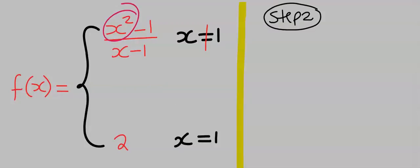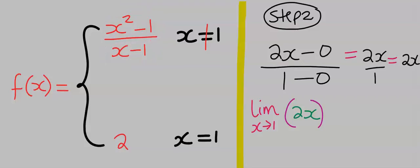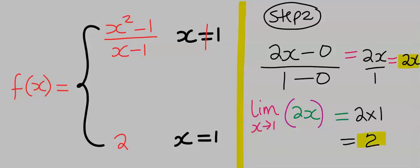Differentiate x squared and you will get 2x. Next, differentiate 1 and you'll get 0. Next, differentiate x and you'll get 1. Next, differentiate 1 and you'll get 0. You are left with 2x. Taking the limit of this remaining function as x tends to 1, 2 times 1 gives you 2, which is the same answer as we obtained before.